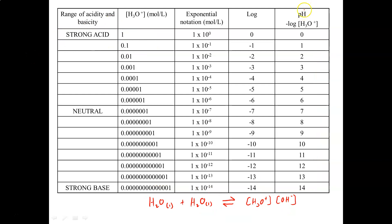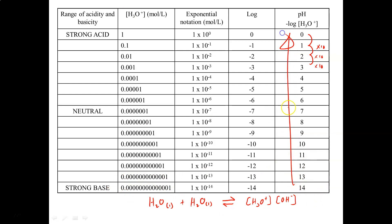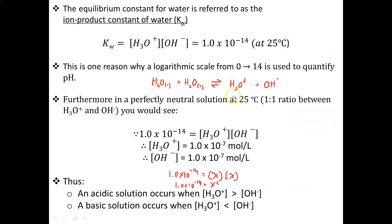To sum this up: the pH scale is a negative logarithm, each jump on the scale is a factor of 10, and the more you increase it, the less hydronium there is but the more hydroxide there is — and vice versa. In a perfectly neutral solution, you have the same concentration of hydronium ions and hydroxide ions. Solving Kw = 1 times 10 to the negative 14 with x squared gives you 1 times 10 to the power of negative 7 for each, which is why a neutral solution at 25 degrees Celsius has a pH of 7.